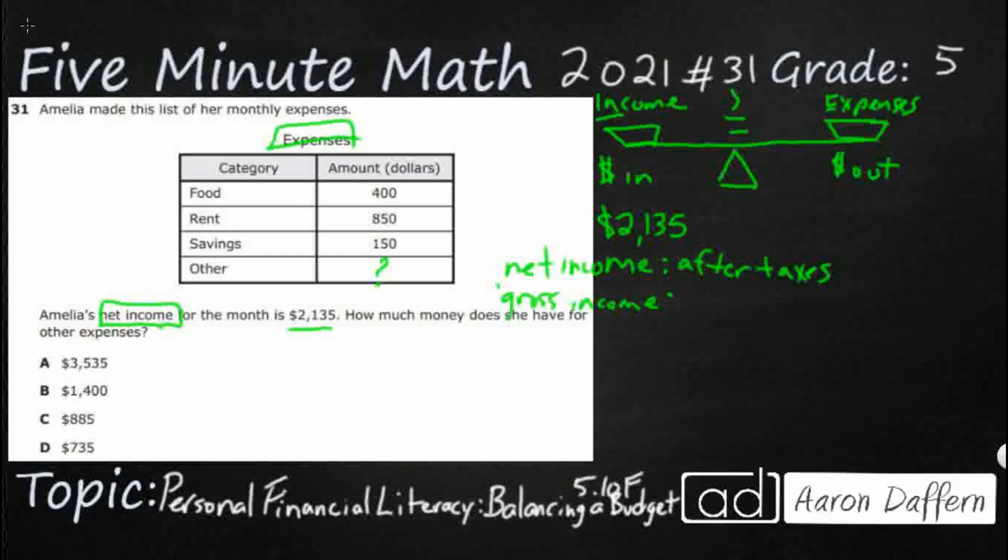The gross is going to be before taxes. And so that's going to be what you make if you just calculate your hours worked times your salary per hour. But they're going to take out Social Security, federal income tax, and Medicare, maybe insurance. So net income is good, because that's just actually how much cash you walk away with.